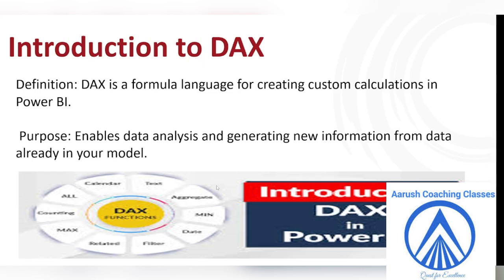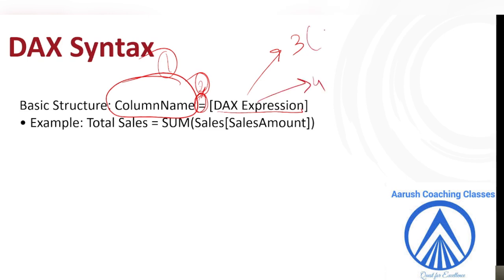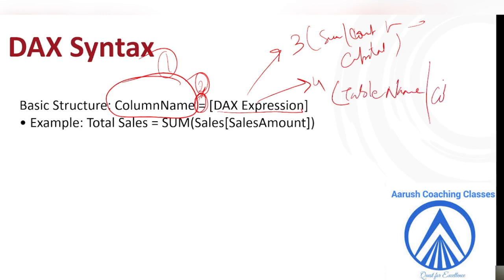Like in Excel you use formulas — min, max, count, filter, and so on. There is a particular syntax which we follow. The syntax is: first, you write the column name — it is basically like a variable name. Second is equal to, which represents that you are going to start your formula from here. Then you write the DAX expression. It is divided into two sections: third is the function like SUM, COUNT, AVERAGE — always in capital format. Fourth is the table name plus the column name. So this is the syntax: variable, assignment, function, table and column name.